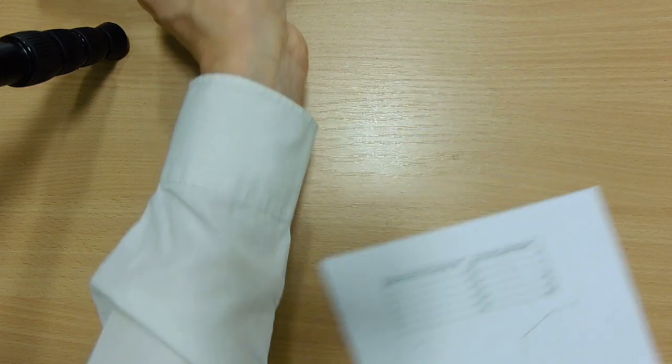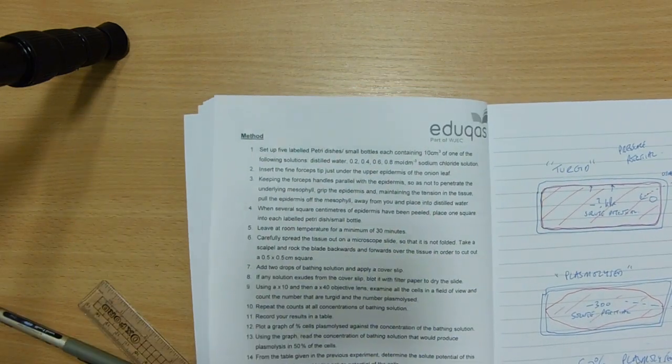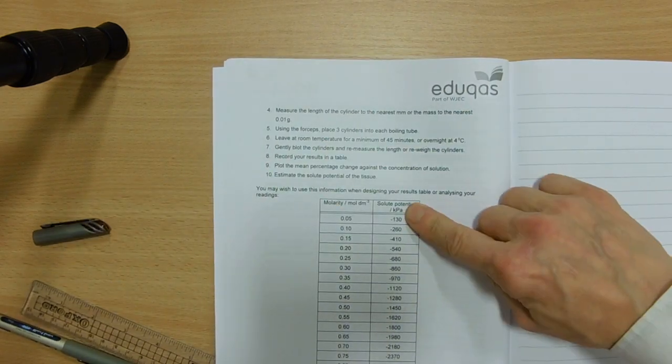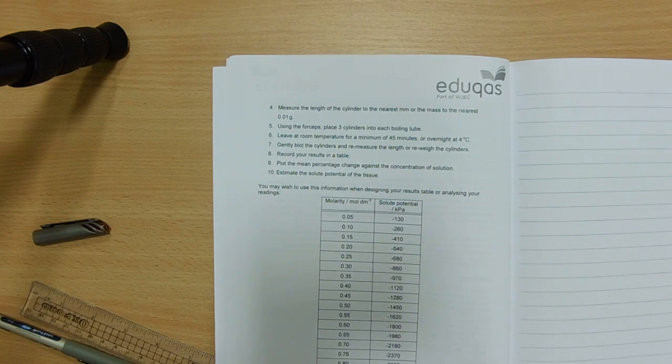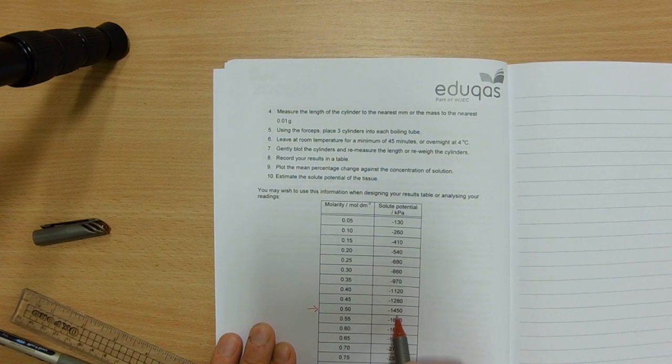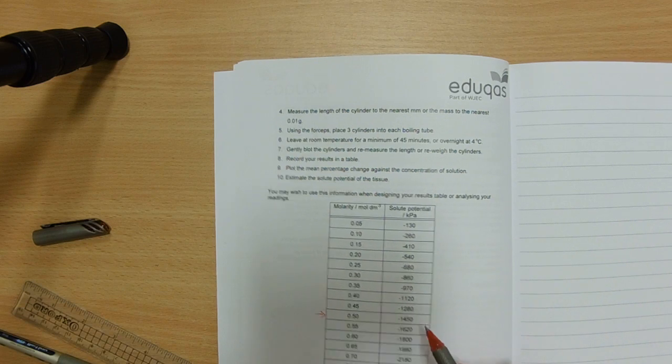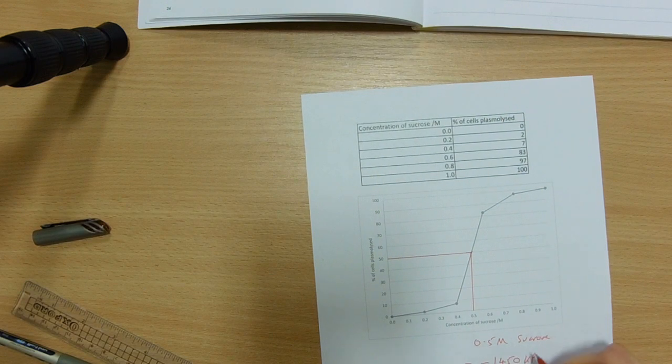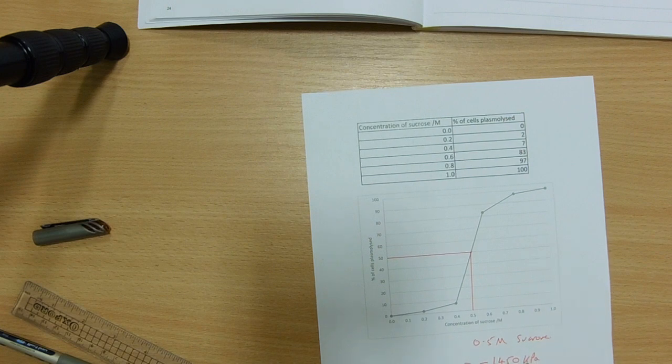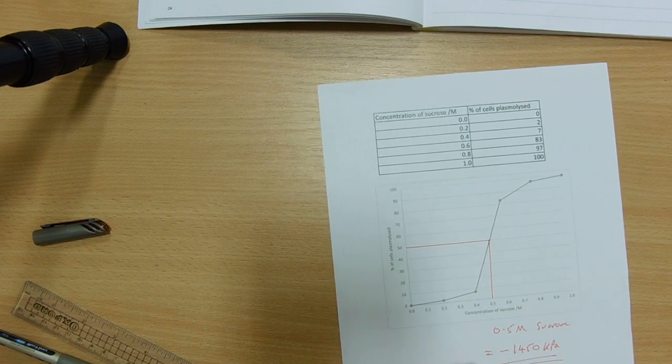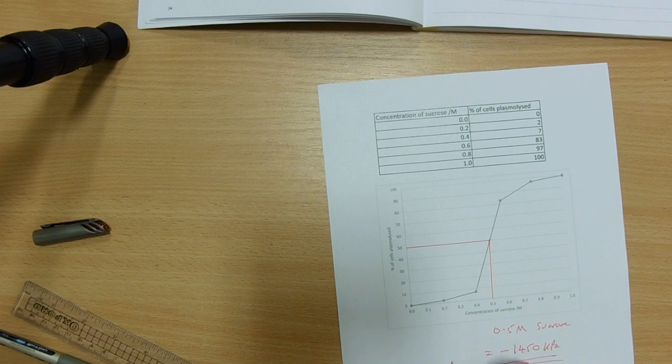But actually, in our lab book, we've got a table. If we look further back, a table showing solute potentials at different molarities. And so for our 0.5 molar, our solute potential is minus 1450. So that equals minus 1450. And the units will be kilopascals. It should be small k there. Kilopascals, thousands of pascals. So that is our solute potential.